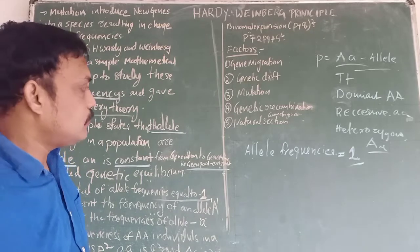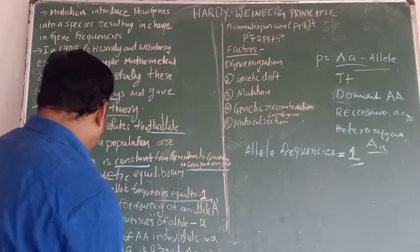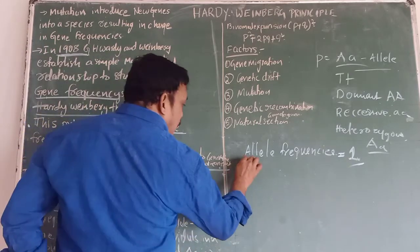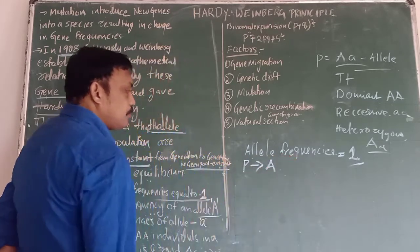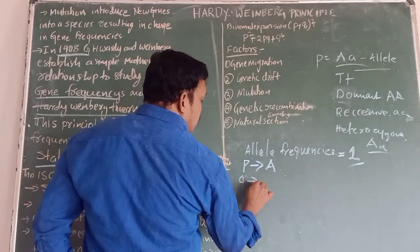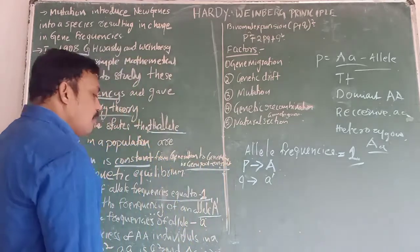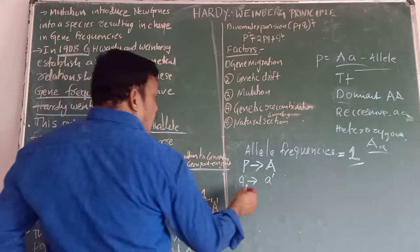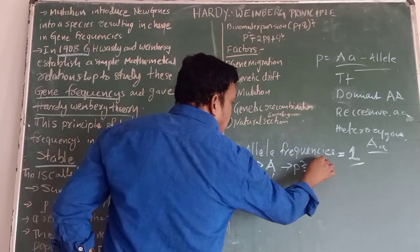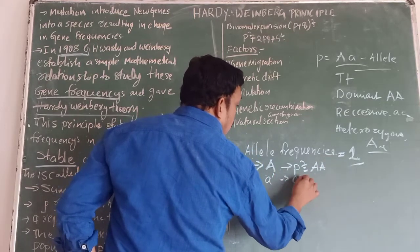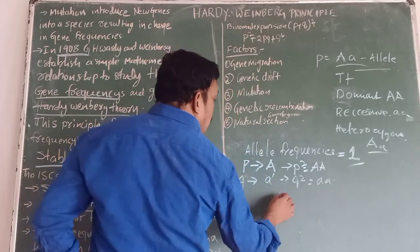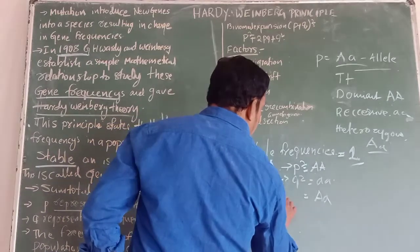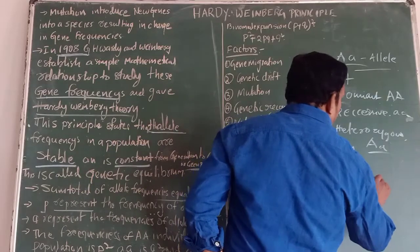How do they explain this? They used one mathematical theorem. Here, P represents the frequency of allele capital A, and Q represents the frequency of allele small a. P squared shows the frequency of homozygous dominant capital A capital A. Q squared shows homozygous recessive small a small a. Heterozygous means they are showing capital A and small a together as 2PQ.